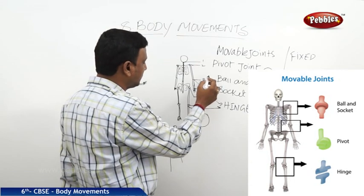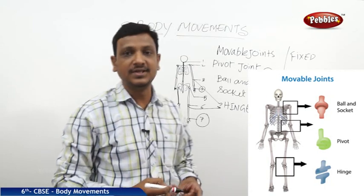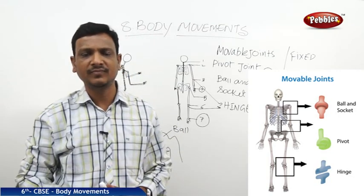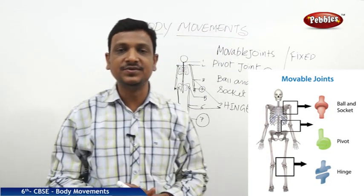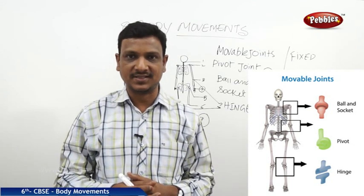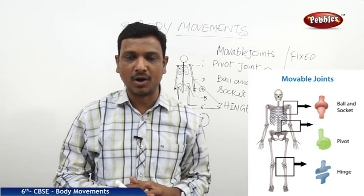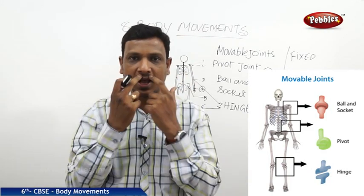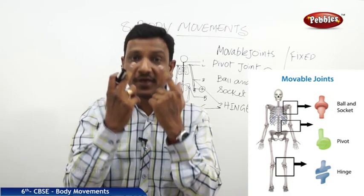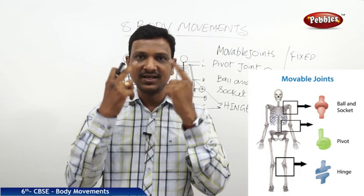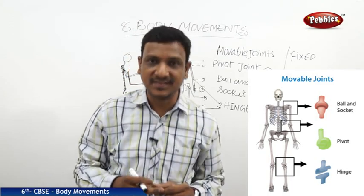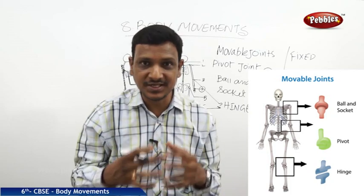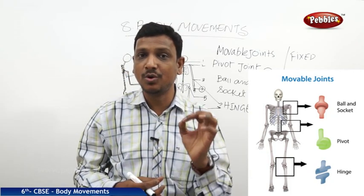We have some more joints — sliding joints. In your wrist you have a sliding joint; it just slides. So all these are movable joints. But we also have fixed joints where you cannot find any movement. For example, when you talk and eat you move your lower jaw, but your upper jaw cannot move because it is fixed in the skull — the upper jaw has a fixed joint with the skull. Similarly, your skull is not a single bone; it is made up of many bones attached together by fixed joints.